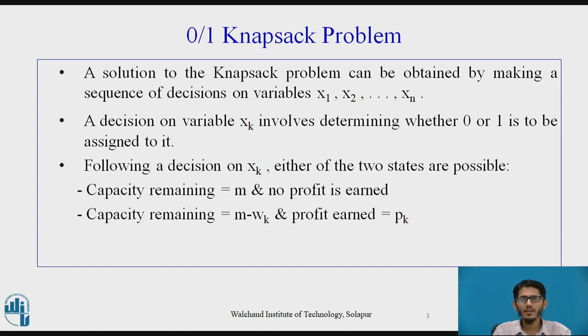Now following a decision on xk, either of the two states are possible. That is, first one, the capacity remaining equal to m and no profit is earned. In this case, xk value is equal to 0.